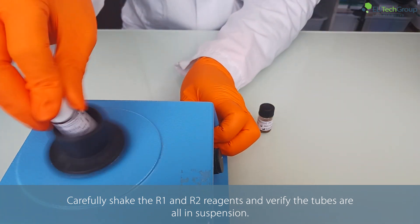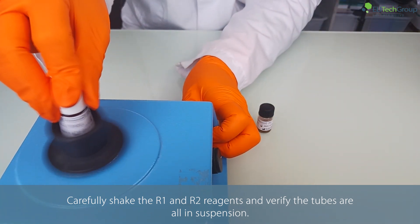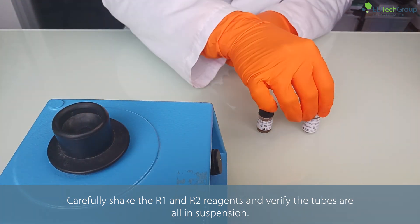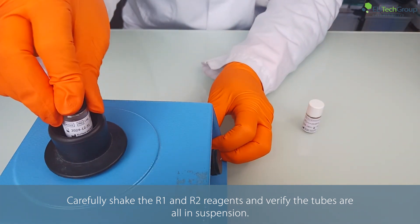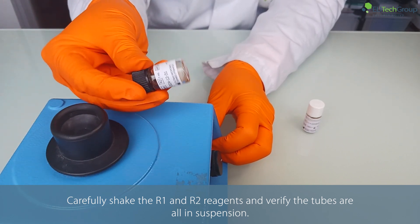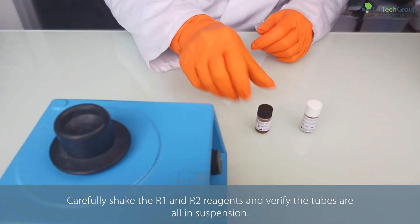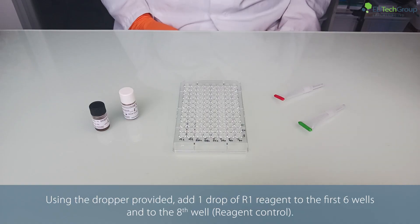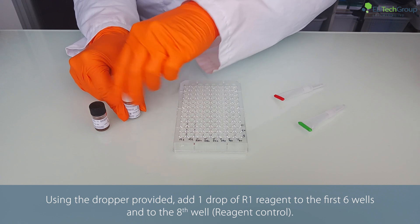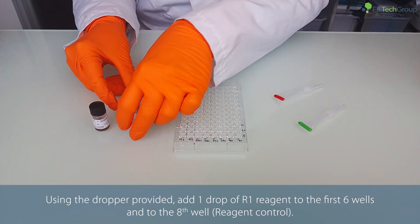Carefully shake the R1 and R2 reagents and verify the tubes are all in suspension. Using the dropper provided, add one drop of R1 reagent to the first six wells and to the eighth well.